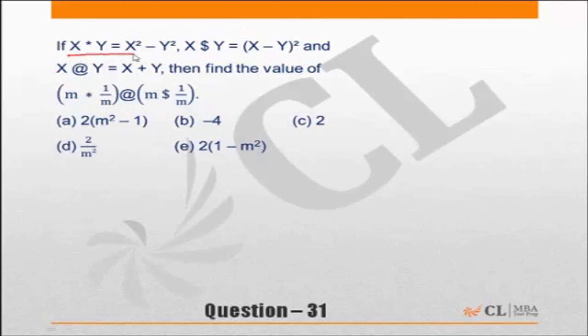x star y is x square minus y square. x dollar y is x minus y whole square. x at the rate y is x plus y. Find the value of m star 1 by m at the rate of m dollar 1 by m.